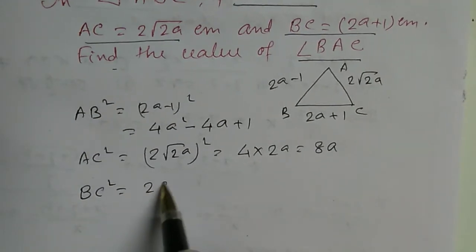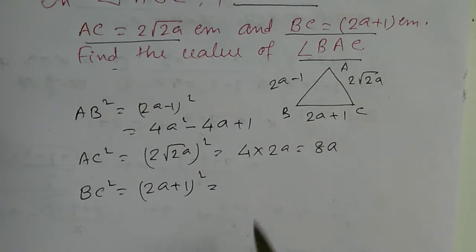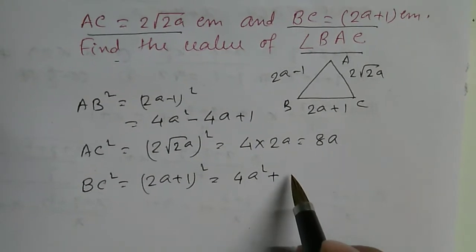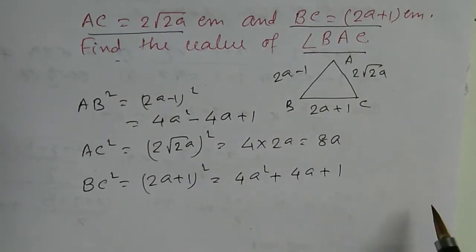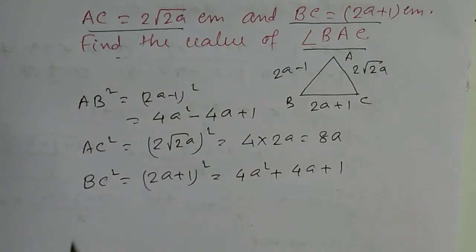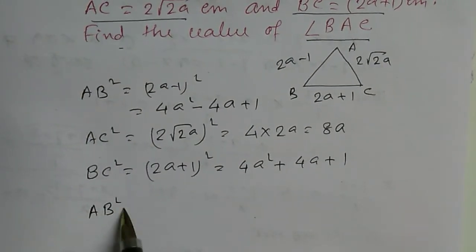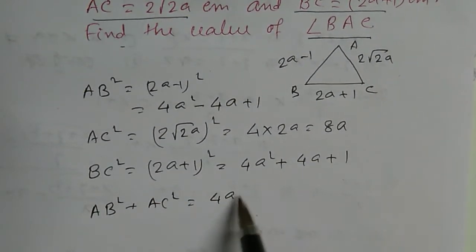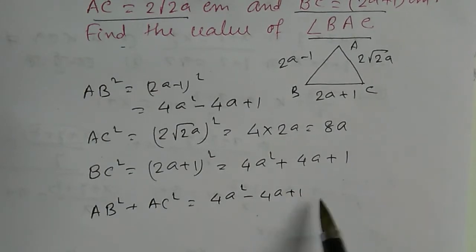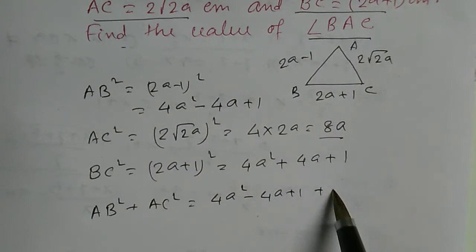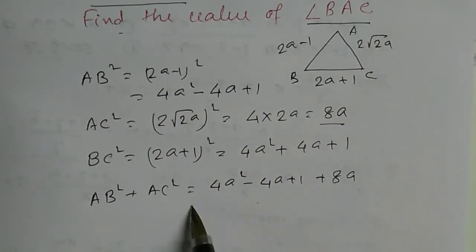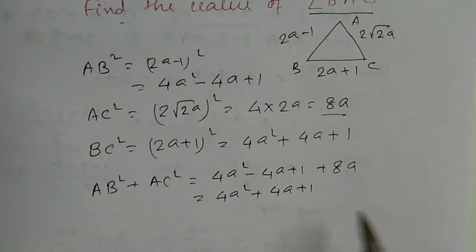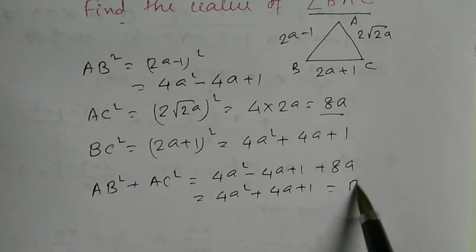And square of BC, 2a plus 1 whole square equals 4a square plus 4a plus 1. Here we note that if we add AB square and AC square, we get 4a square minus 4a plus 1 plus AC square 8a. This is 4a square plus 4a plus 1. This is nothing but the BC square.